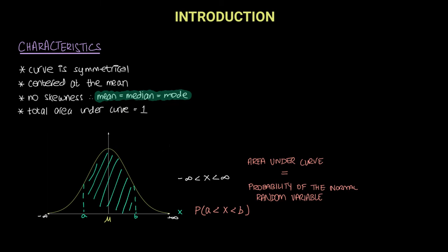Lastly, the total area under the curve from minus infinity to infinity equals 1 — so the total probability is equivalent to 1. These are the properties of a normal distribution. In the next video, we will learn how to compute probabilities by using the standard normal distribution table, rather than integrating the probability density function.